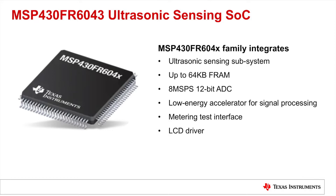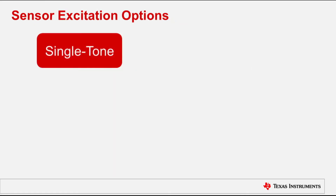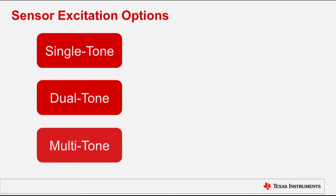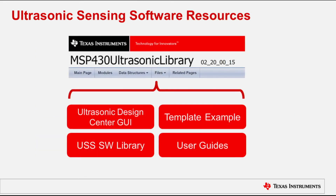The MSP430 FR6043 ultrasonic sensing MCU combines ultra-low power with an integrated analog frontend for ultrasonic sensing to provide a highly accurate and precise SOC for flow metering. It supports single-tone, dual-tone, and multi-tone sensor excitation, allowing waveform capture-based flow measurement for both water and gas.